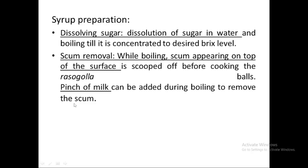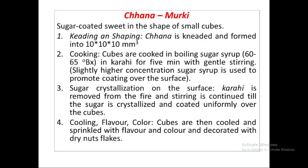Chana murki is another product. Although it's called chana murki, it is actually prepared from paneer, because we need a hard body in this case. We take paneer, cut it into one centimeter cubes, and then cook it in boiling sugar syrup. Here we do not need sugar clarification — we simply prepare a 60 to 65° Brix solution and add the cubes into it to cook.